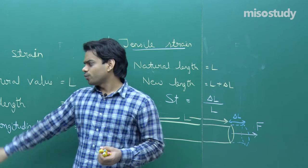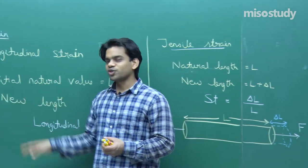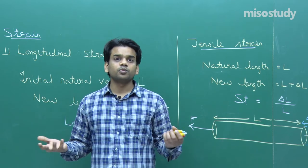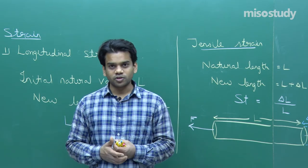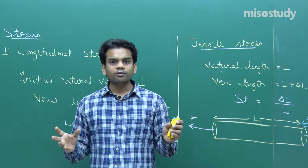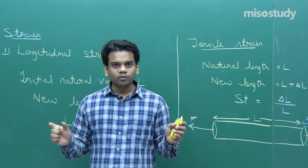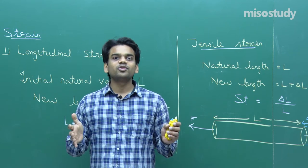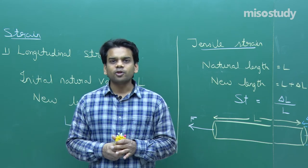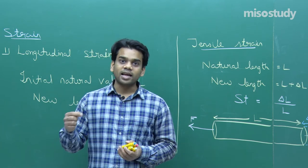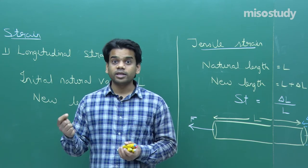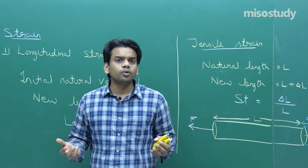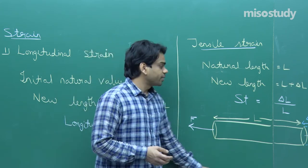The difference between longitudinal strain and tensile strain: in longitudinal strain, the force may not be perpendicular to the area of cross-section — it can act in any direction — but you still evaluate the strain as delta L by L. For tensile strain, the force must be perpendicular to the area of cross-section.